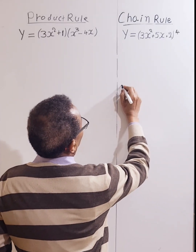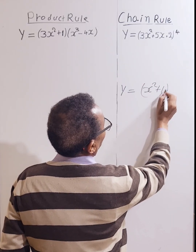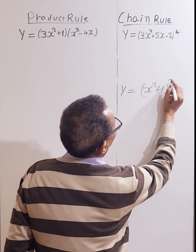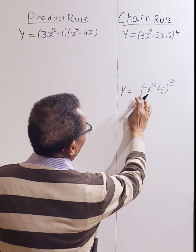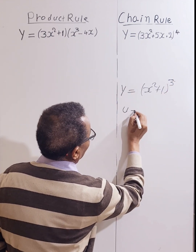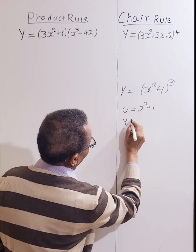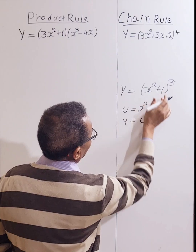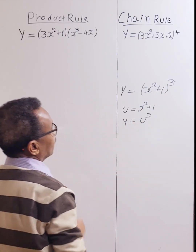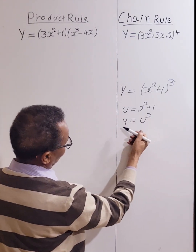For example, if y is equal to (x² + 1)³, you have an inner function and an outer function. So u equals x² + 1 as the inner function, and y equals u³ as the outer function. If u is a function of x and y is a function of u,